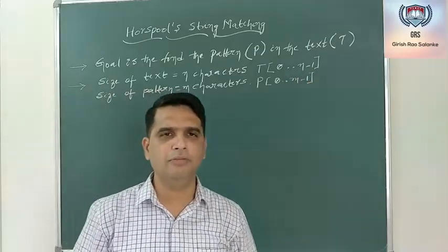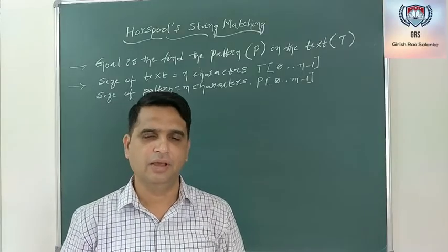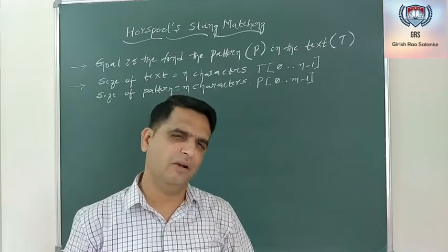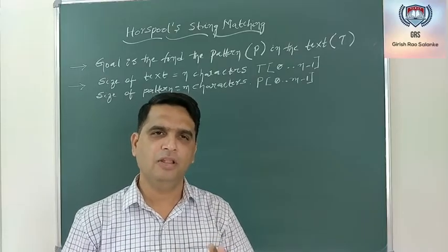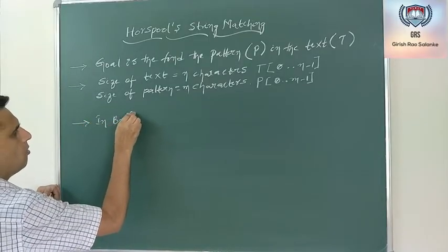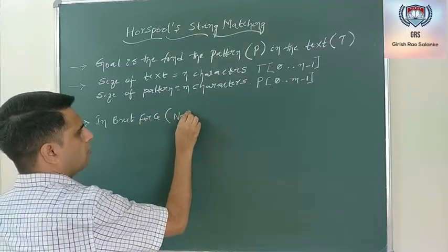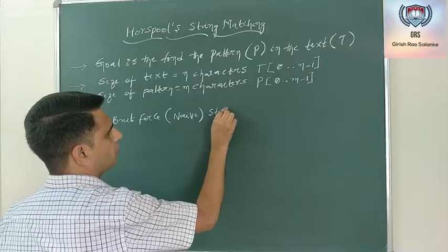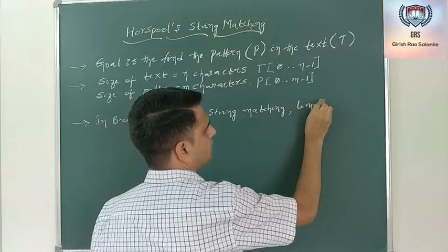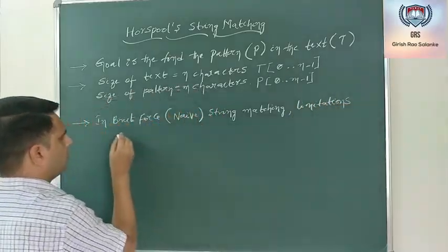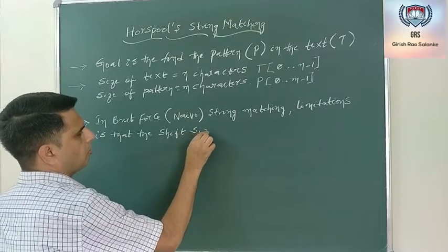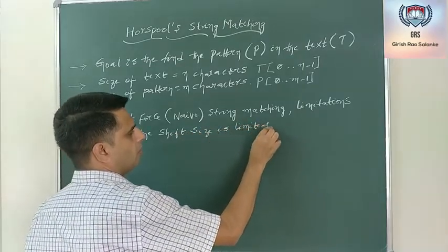One of the major limitations of the brute force string matching algorithm — rather than calling it NAV, let me call it brute force — is that the shift size was limited to 1.